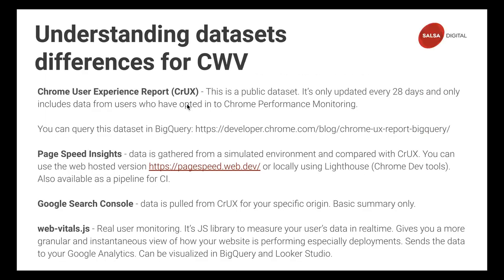First you need to understand how the data is acquired. The Chrome User Experience Report is a public data set provided by Google, captured from the Chrome web browser when you enable the setting to send anonymous statistics to Chrome. This data is publicly available but only updated about once a month. You can query this data in BigQuery — there's a link for that.